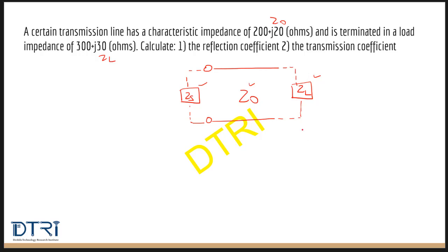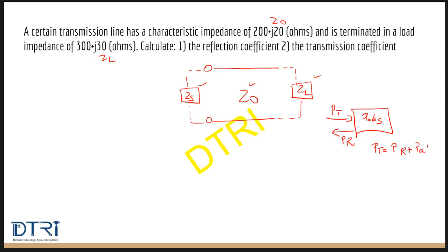For example, consider this system: this is the transmitted power Pt into the system, this is the absorbed power by the system, and this is the reflected power Pr. So P-transmitted equals P-reflected plus P-absorbed. In the ideal case we don't want anything to be reflected — we want all the transmitted power to be absorbed by the load, which means maximum power transfer. But in the real world that won't happen.